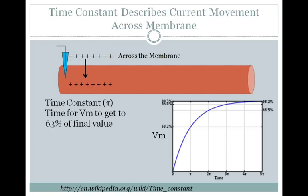It's a little easier to look at this graphically. So if we have membrane voltage here — and remember Vm and Em are interchangeable — let's say you go from a membrane voltage of 0 to 100.